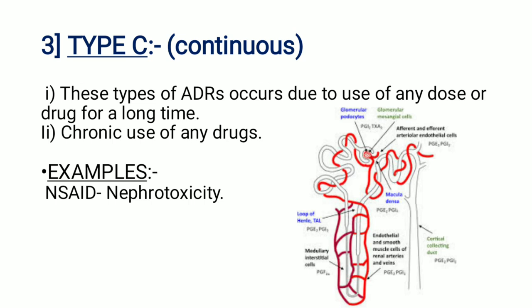Type C: This type of ADR — adverse drug reaction — occurs due to use of any dose or drug for a long time, i.e., chronic use of any drug. For example, NSAIDs causing nephrotoxicity.